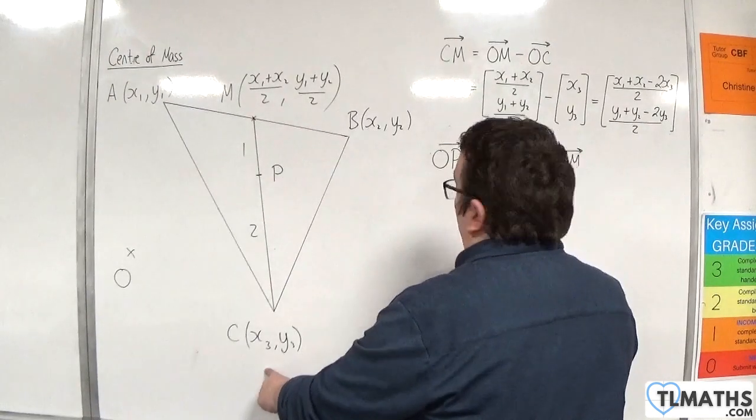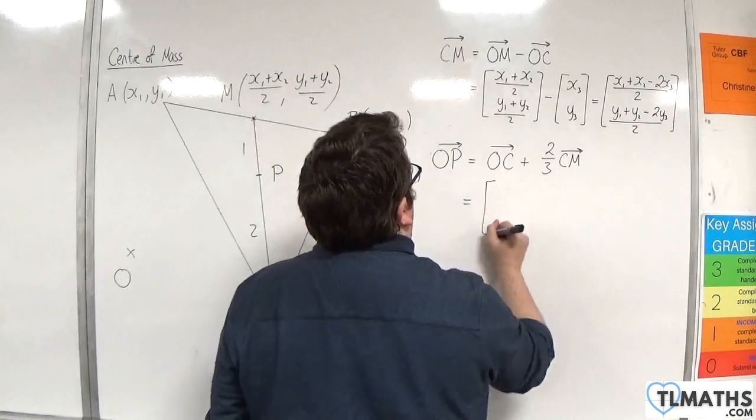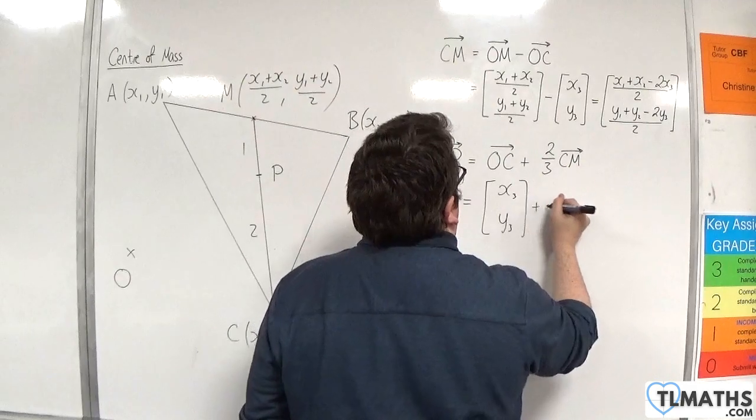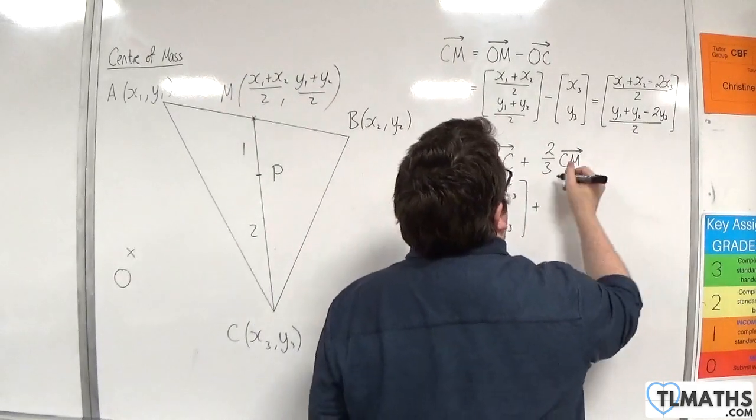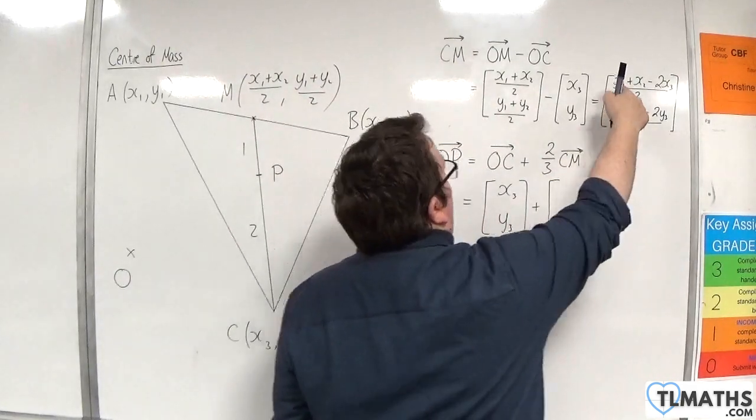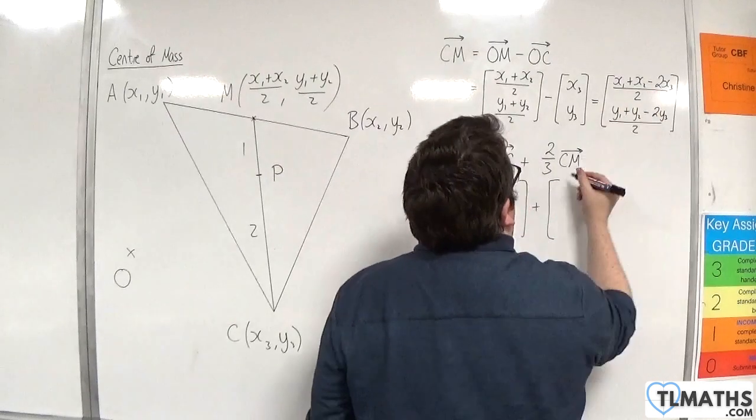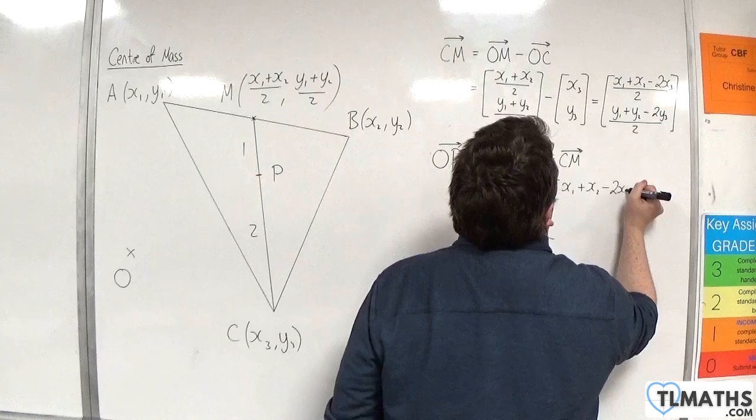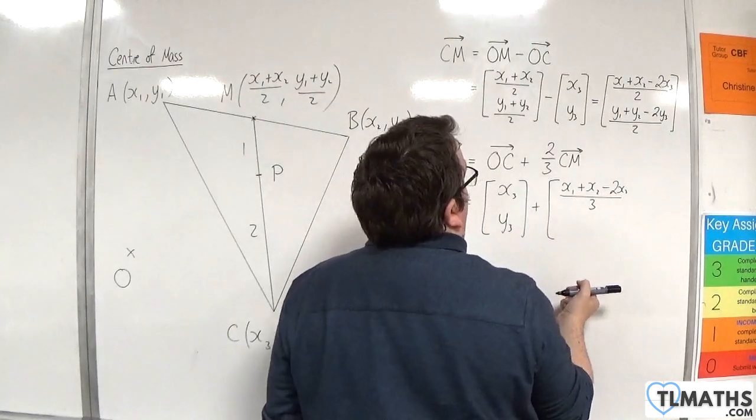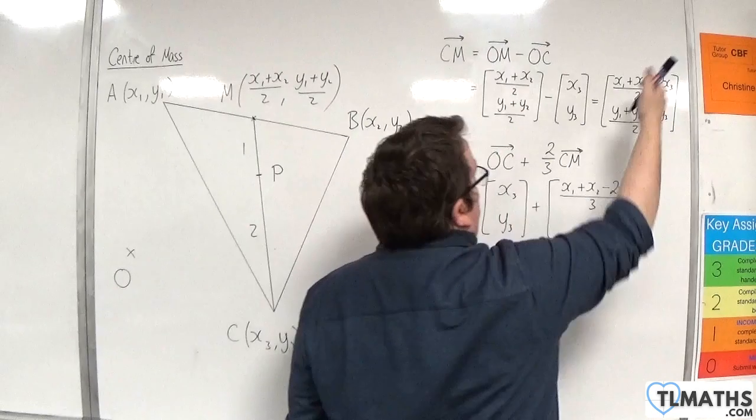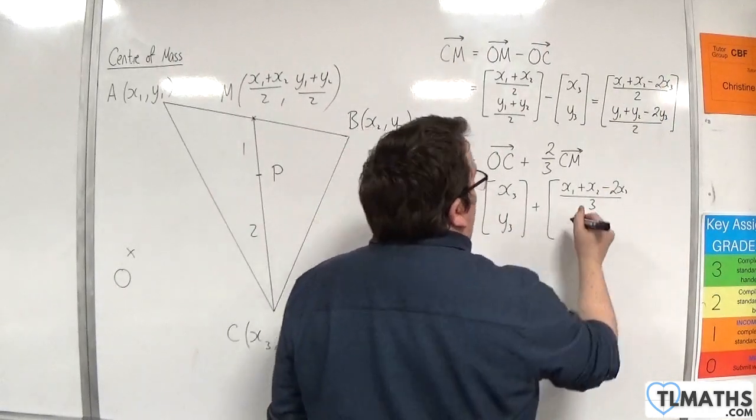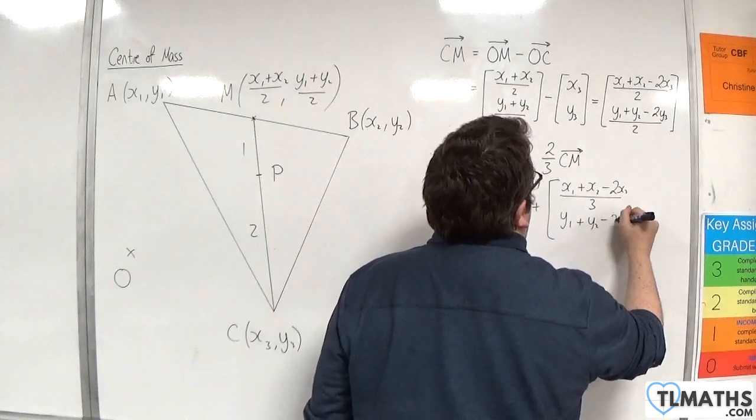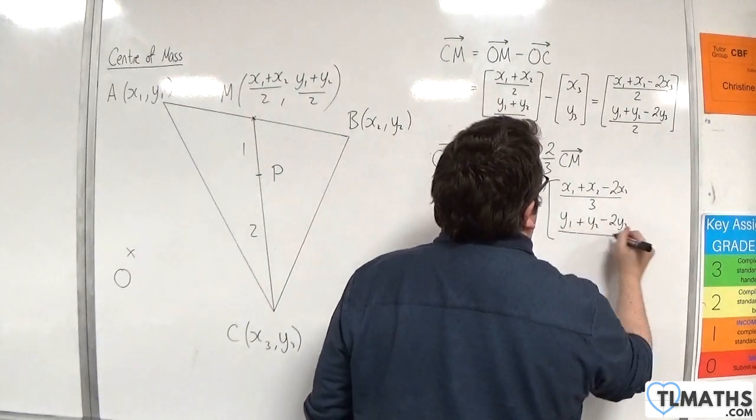So, O to C is X3, Y3. And I want to add two-thirds of this vector. So, I'm going to multiply this through by two-thirds. And that would just be X1 plus X2 minus 2X3 over 3. Because the 2s would cancel and I'd just be left with multiplying by a third. And Y1 plus Y2 minus 2Y3 over 3.